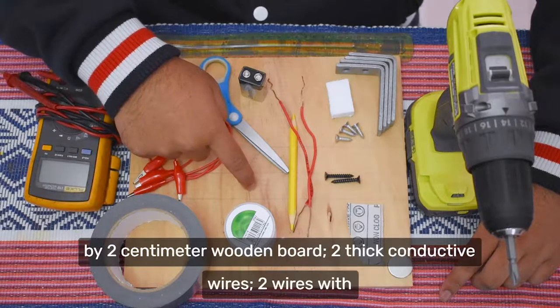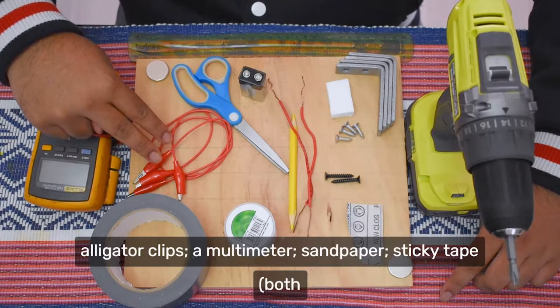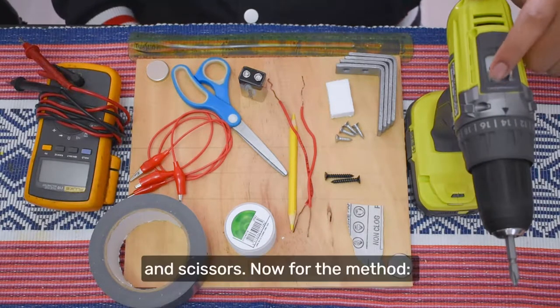a 25cm x 30cm x 2cm wooden board, 2 thick conductive wires, 2 wires with alligator clips, a multimeter, sandpaper, sticky tape, both duct tape and clear tape, a screwdriver and scissors.